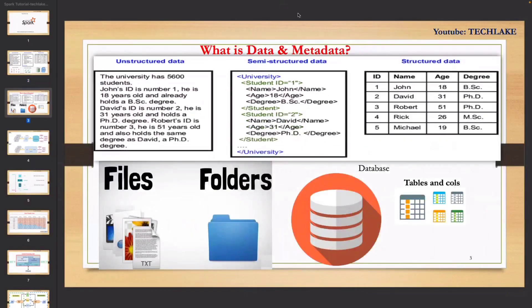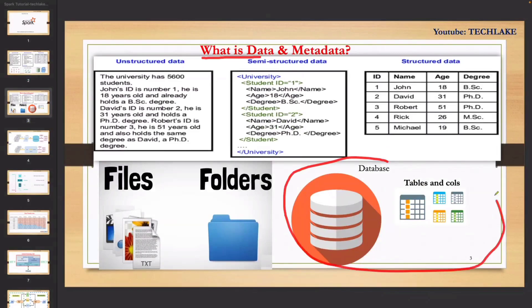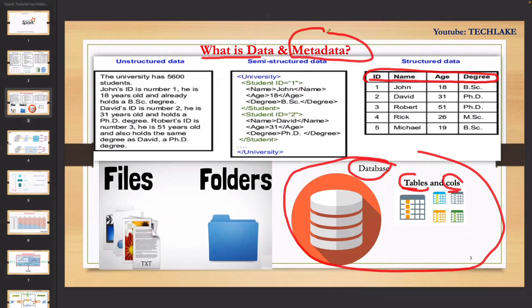You should also know what is metadata. Data is information; how you manage that information is called metadata — data about data. If you're managing information in a database in a particular table with particular columns, those column names, data types, table name, and database name — we call it metadata. So database name, table name, columns, and data types are all metadata.